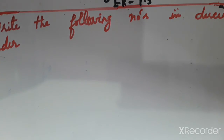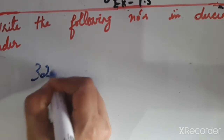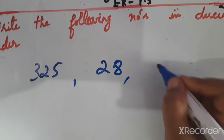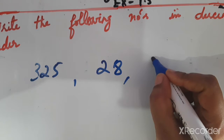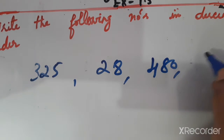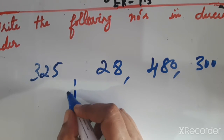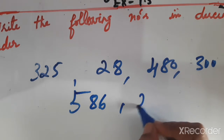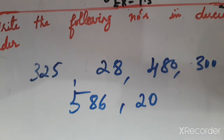Now tens or hundreds place numbers. For example, mixed numbers: 3, 25, 28, 4, 80, 300, 5, 80, 6, 20.